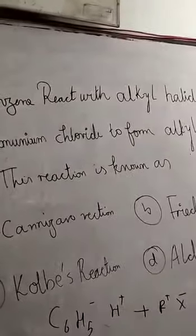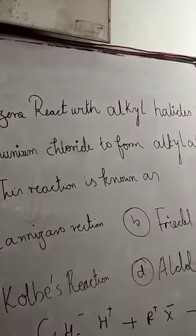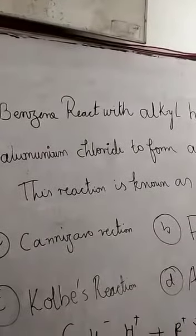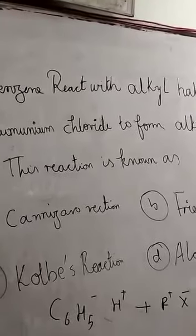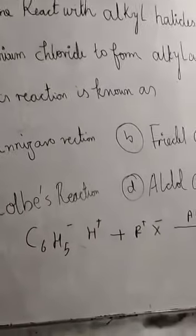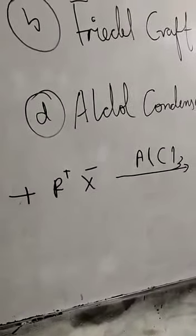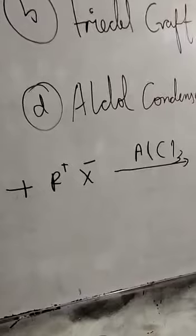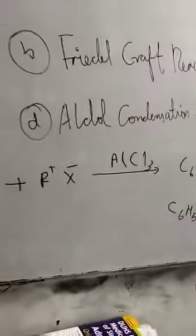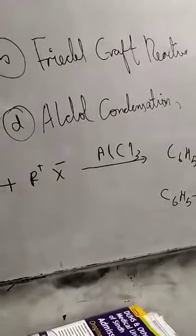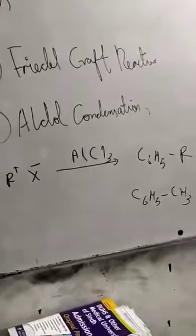Benzene reacts with alkyl chloride in the presence of aluminum chloride. For alkylation and acylation: alkyl chloride is used for alkylation, acid chloride is used for acylation. The conditions are alkylation at room temperature and acylation at 80 degrees centigrade.